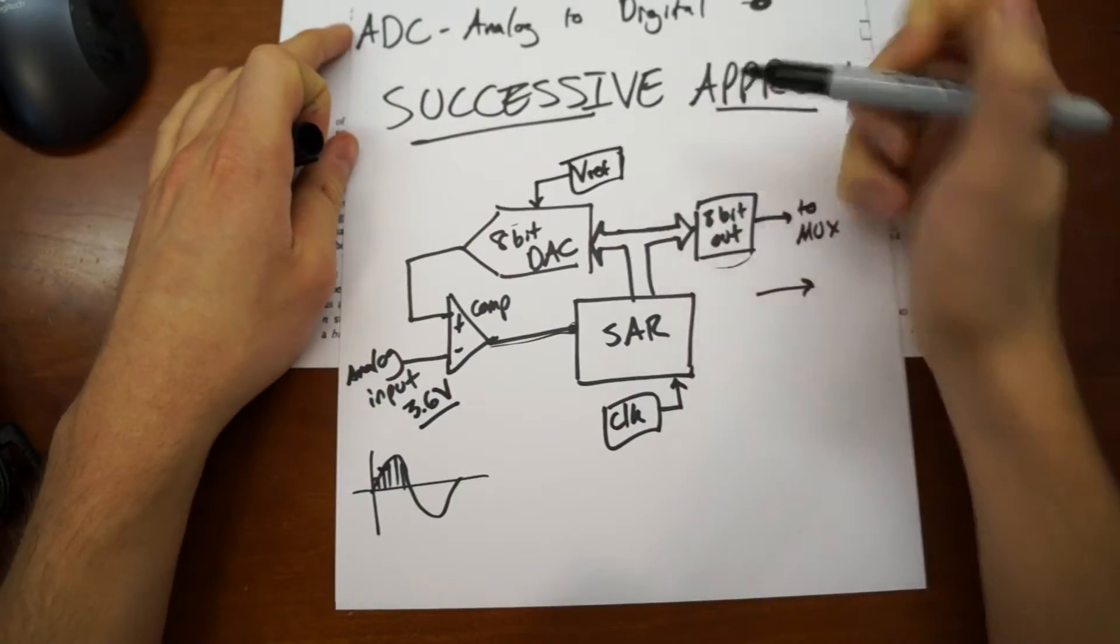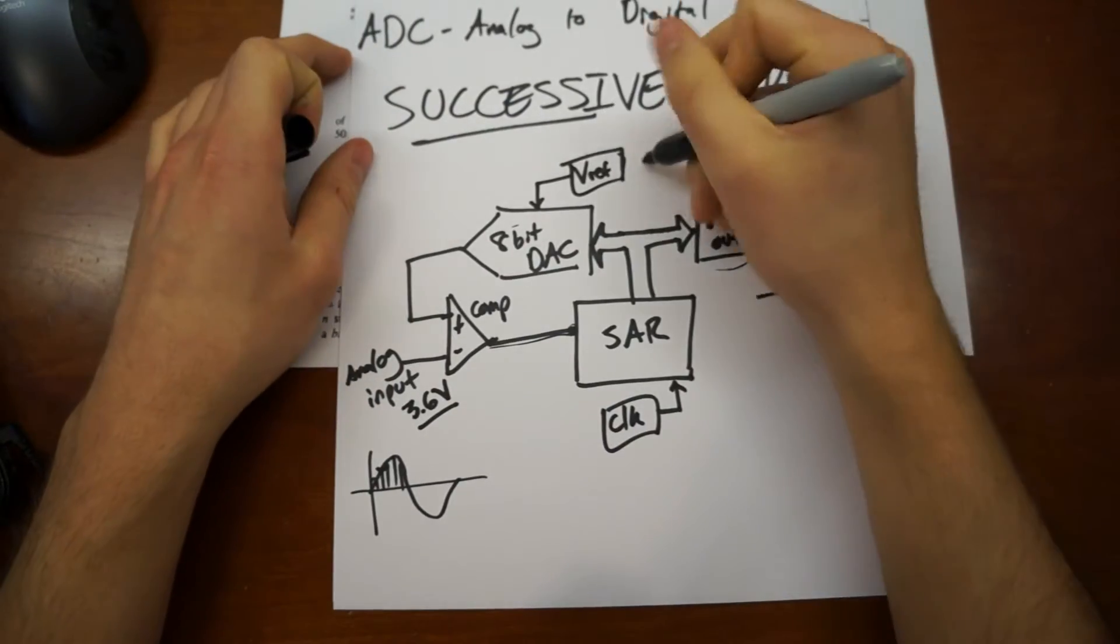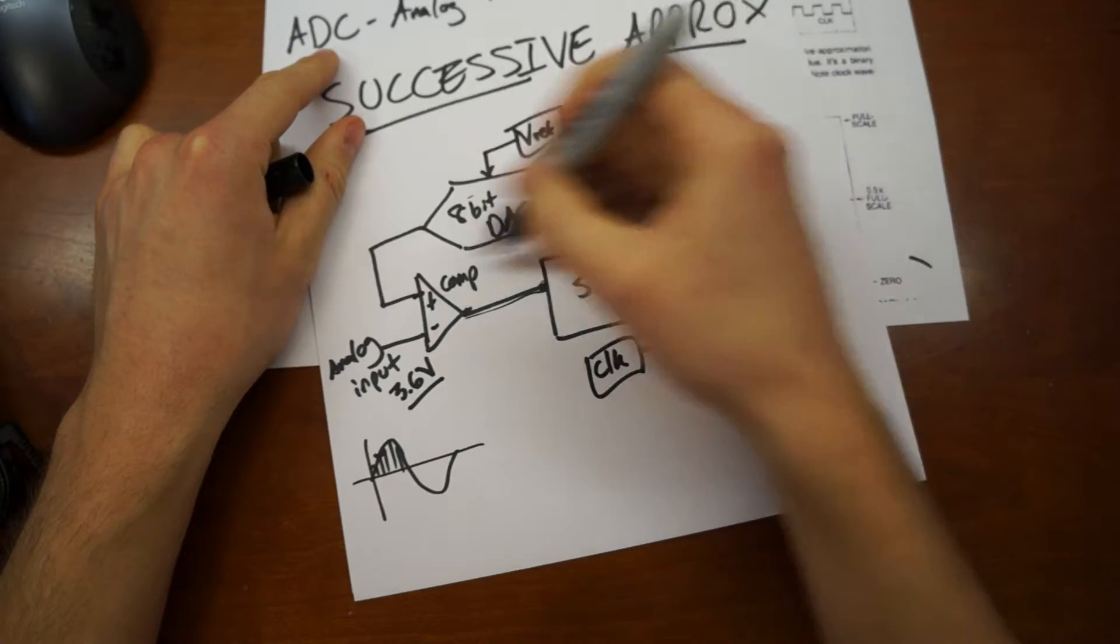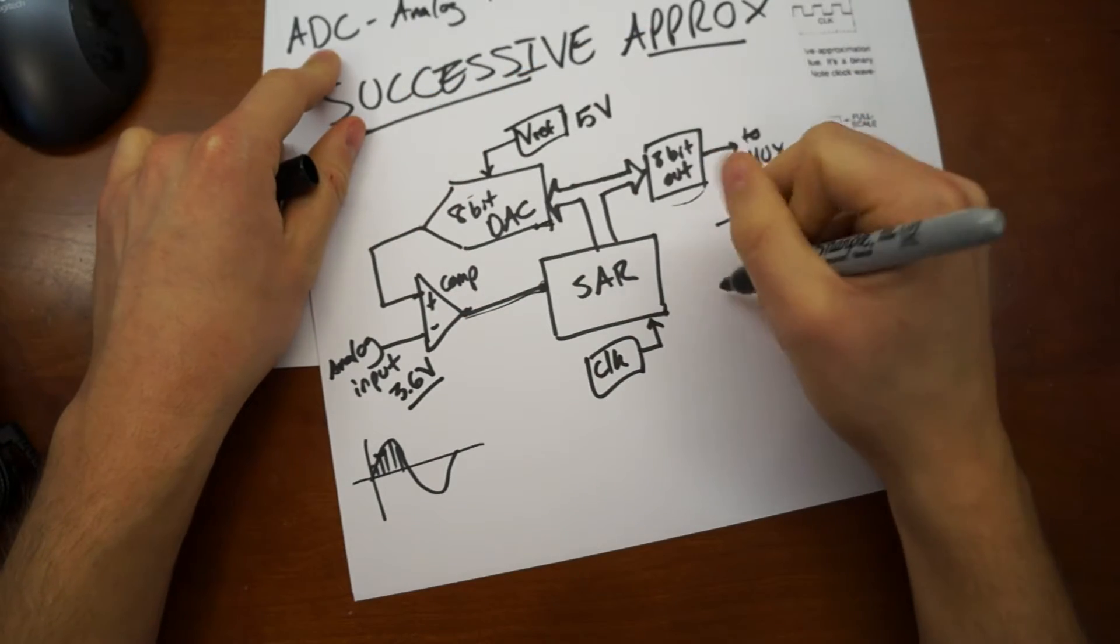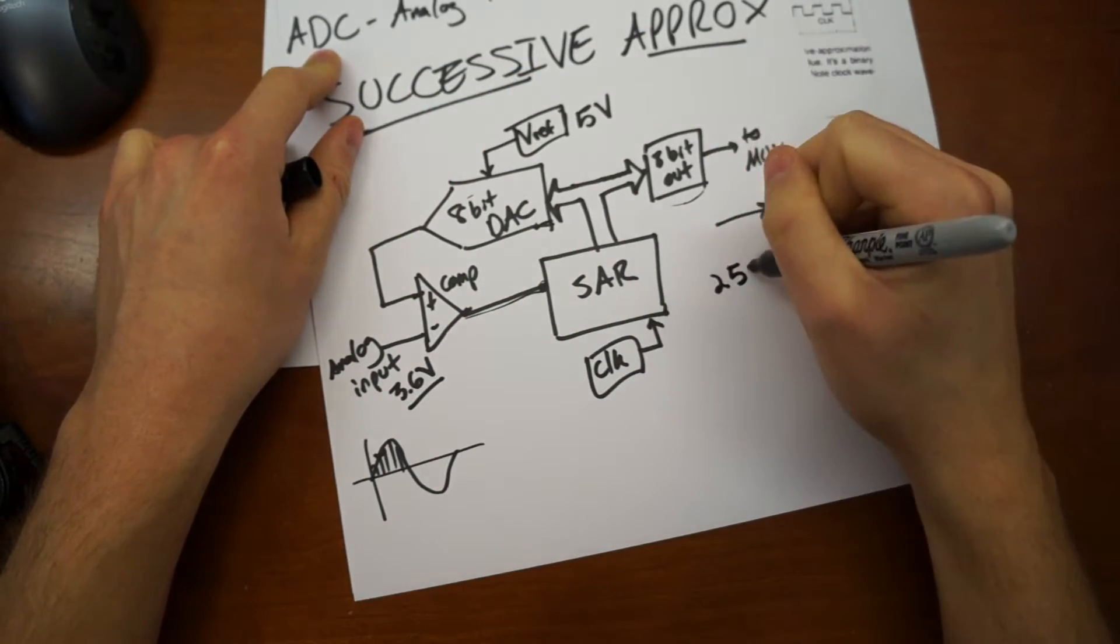So the reference voltage, we'll say, is like our maximum voltage, and it's, in this case, on the Arduino, it's 5 volts. The 8-bit DAC is going to output half of that, so 2.5 volts.